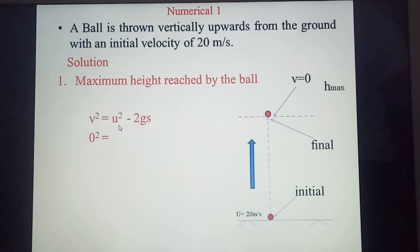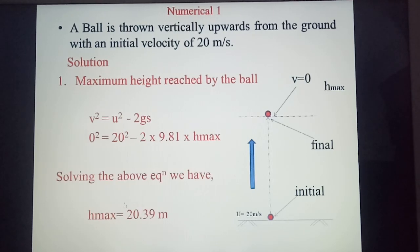We know final velocity is 0, initial velocity is 20. Then, the only unknown here is h_max. And then solving that will be getting our h_max, which is coming around 20.39 meters.